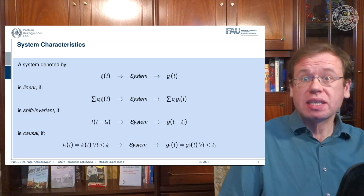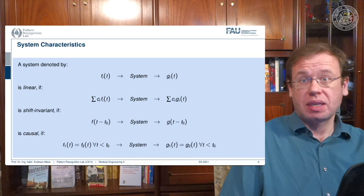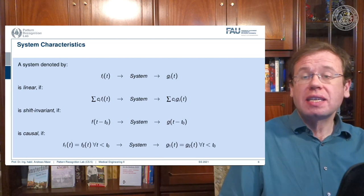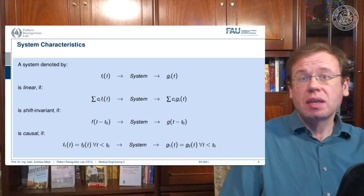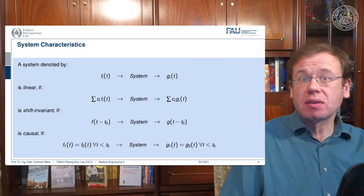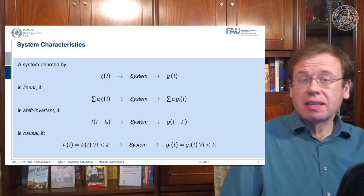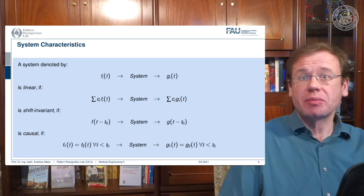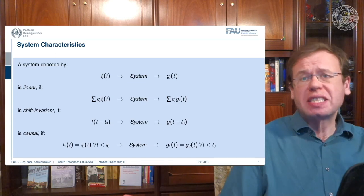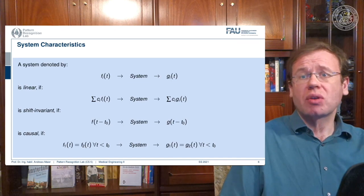Another very important characteristic is if a system is shift invariant. This means that if you shift with some variable t0 - we subtract t0 in order to shift the input signal - then if the system is shift invariant, this is nothing else than shifting also the output signal. So shift invariance means that a system processes independently of the shifting of the signal. If I shift the signal, process it, and get the output, it is identical to processing first and then shifting. We'll see that linearity and shift invariance are very important properties that allow us to describe systems very elegantly if both properties are fulfilled.